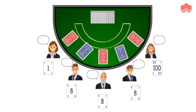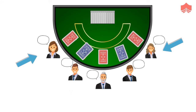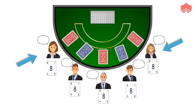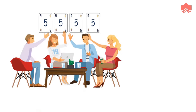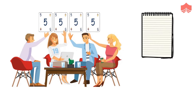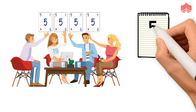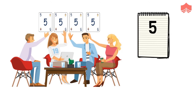If not, then all estimators discuss their estimates further. The estimators who selected the highest and lowest value should especially share their reasons. After further discussion, each estimator reselects an estimate card and all cards are again revealed at the same time. This process continues until the consensus of all the estimators is achieved. When everyone is holding up the same number, we are done. That number is written as the estimate and we move on.